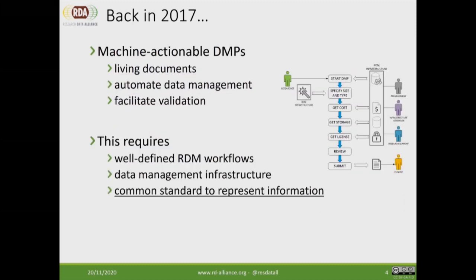Back in 2017 we were mostly showing this slide to people — many of you may have seen it several times — but it's a very important one. We defined what machine actionable DMPs should be: living documents, with the goal of automating data management by allowing different stakeholders to communicate efficiently and providing a way for systems to act on their behalf. Of course, we always wanted funders to be in scope.